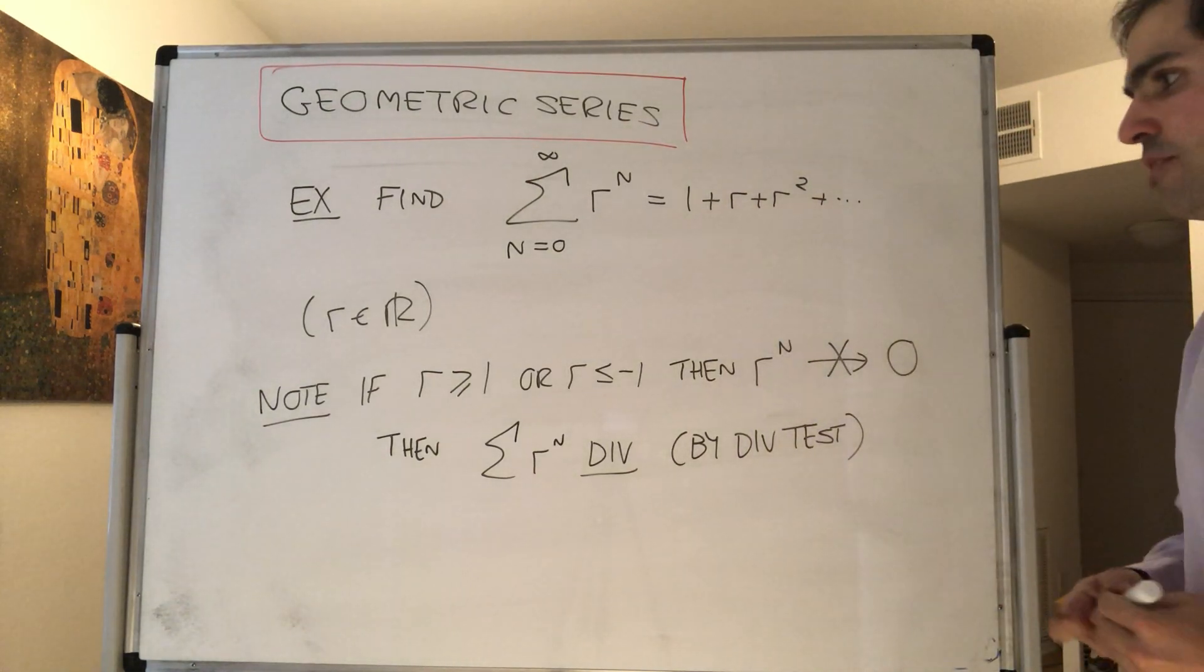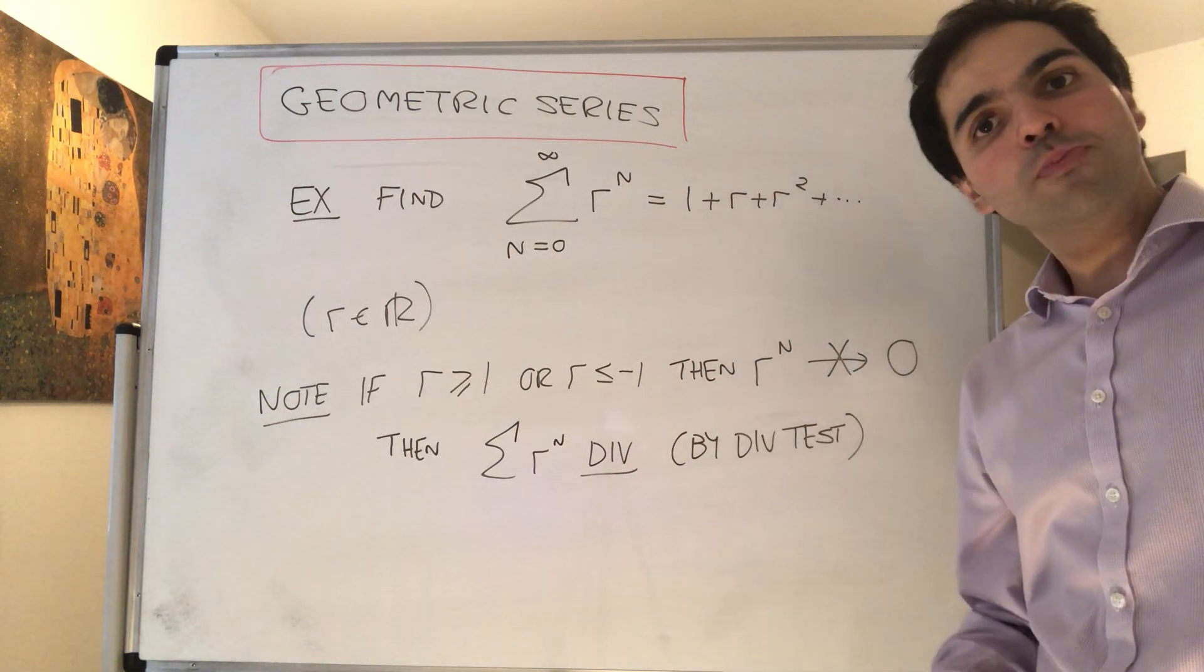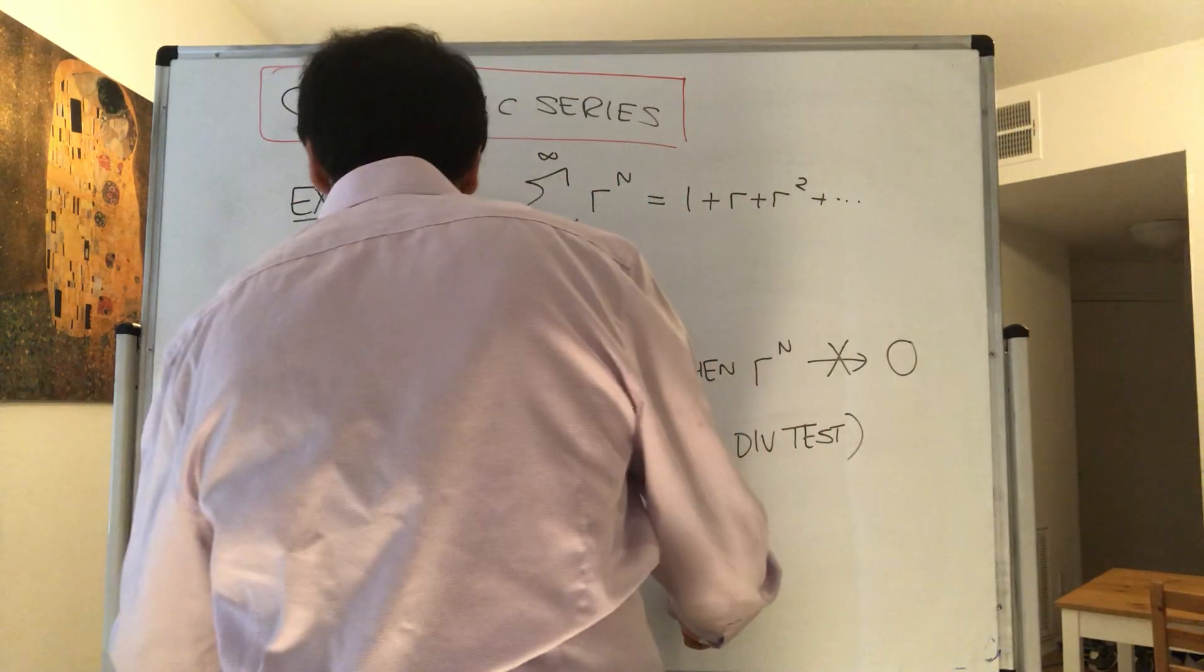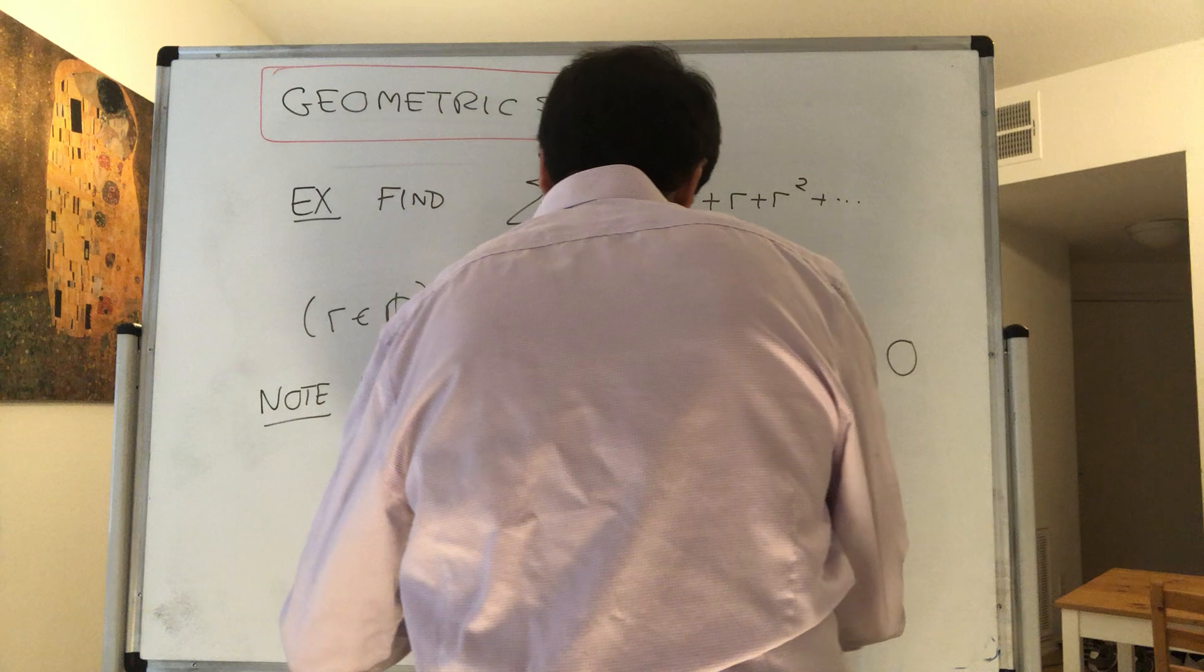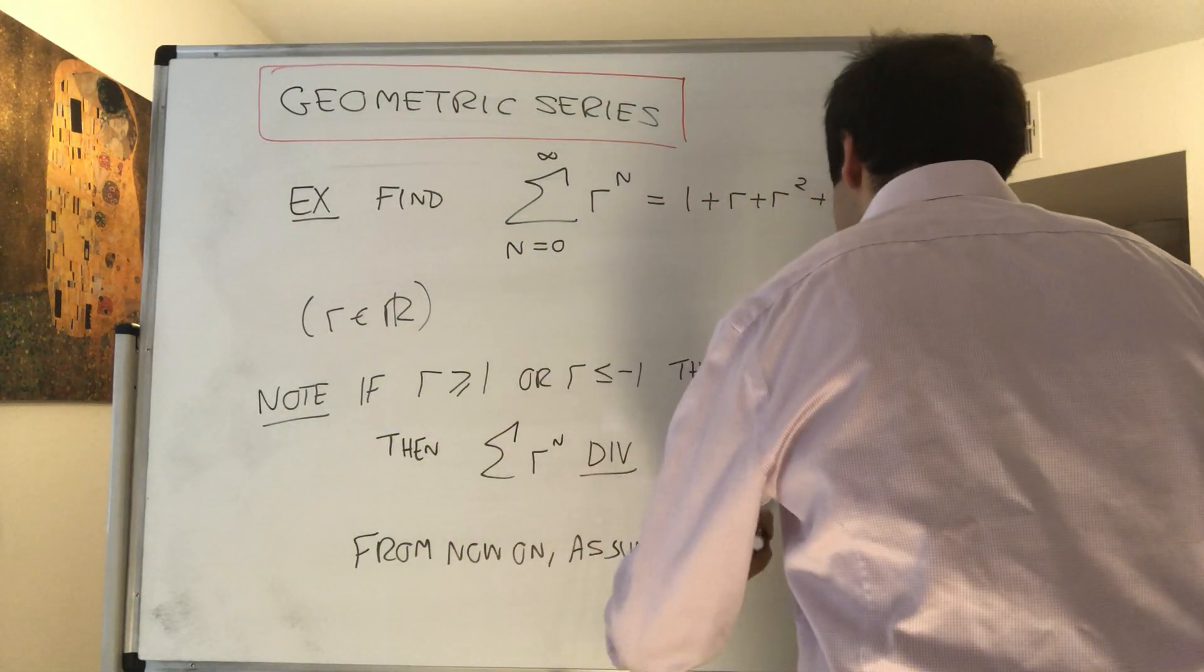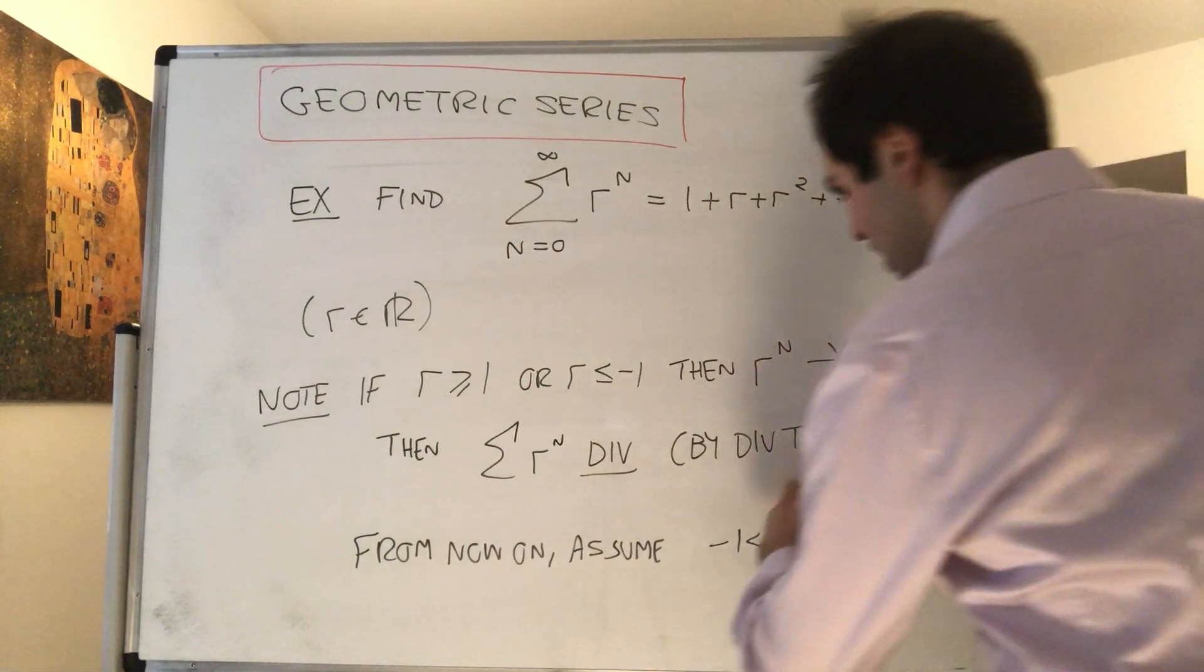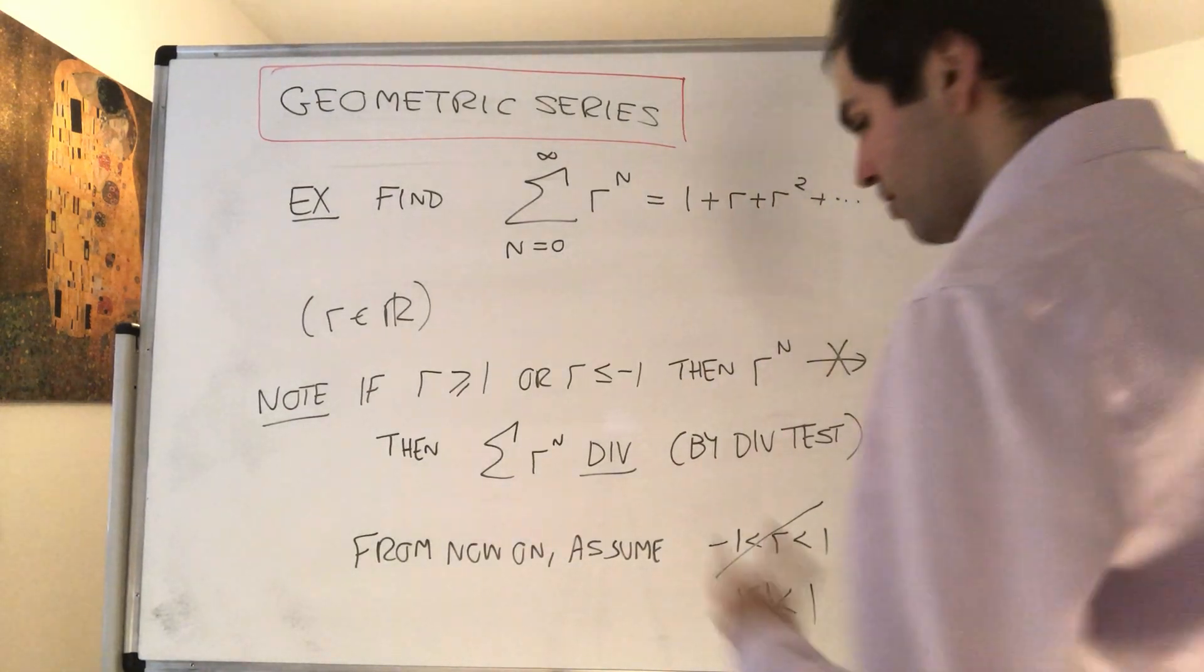What does that mean? Let's just focus on the interesting region, which means r is strictly between minus 1 and 1. So from now on, assume r is strictly between minus 1 and 1, or equivalently, absolute value of r is strictly less than 1.